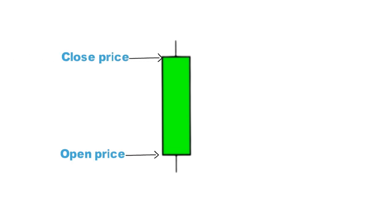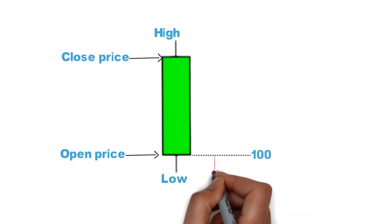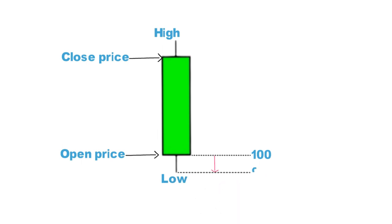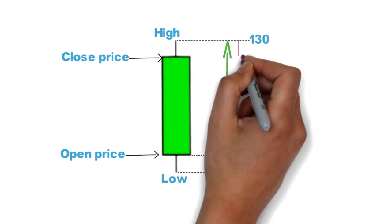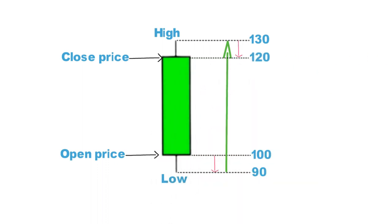Let's see how a candle forms. This is open, this is close, this is the high point and low point. Market opens at 100 level, then sellers try to take it down to 90 level, then buyers are aggressive and push it up to 130 level, then very few sellers come into the picture and it closes at 120 level. This is how a candle forms.